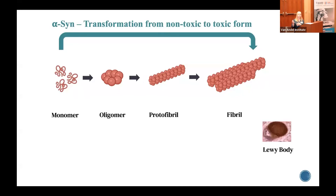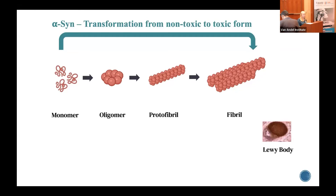This is how monomers convert to fibrils and contribute to the development of Parkinson's disease. One of the targets of Parkinson's disease research is to reduce these toxic forms of alpha-synuclein. Here at the institute, we are continuously working to find ways to slow down the progression and development of Parkinson's disease. One of our aims is to detect alpha-synuclein — whether it is available only in the brain or at other possible sites. I will now call Dr. Irazanis, who is working on the different methods for the detection of alpha-synuclein.